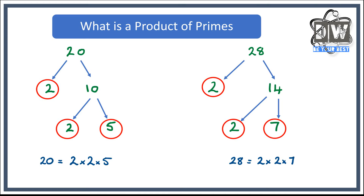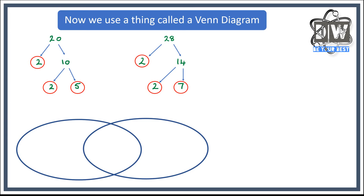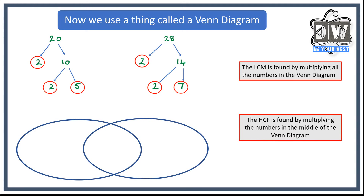We're going to use this information with a Venn diagram to give us our answers. The Venn diagram means we're going to share some information in the middle — some will be unique to 20, some unique to 28, but some will be the same in both. The lowest common multiple is found by multiplying all the numbers together, and the highest common factor by multiplying just the middle numbers.